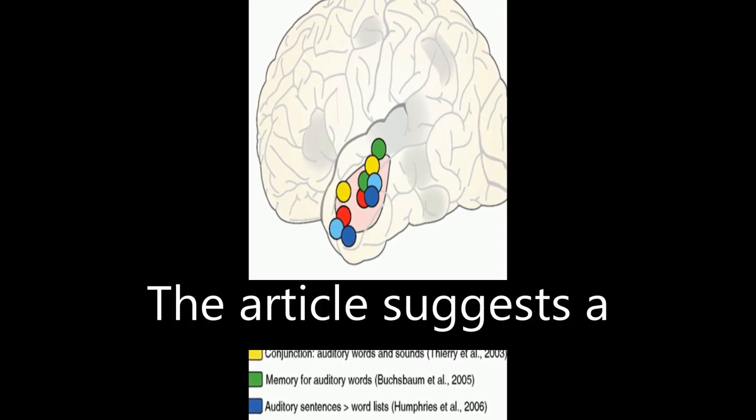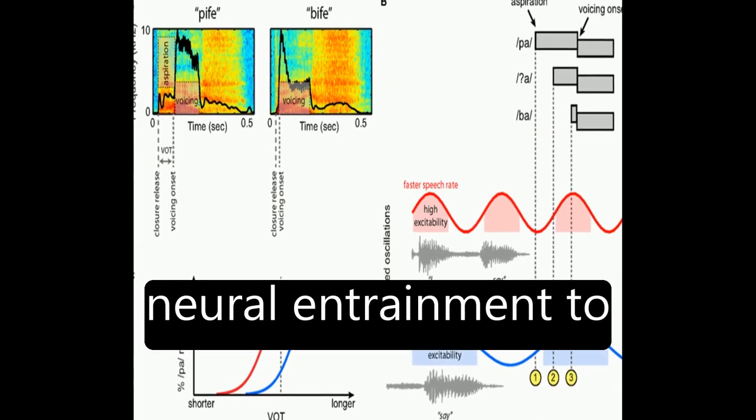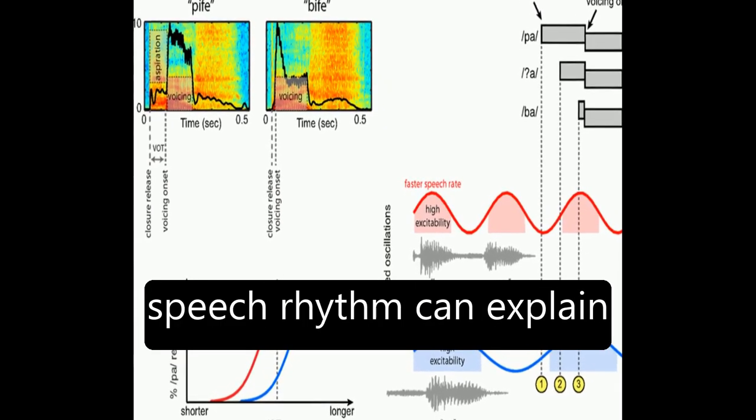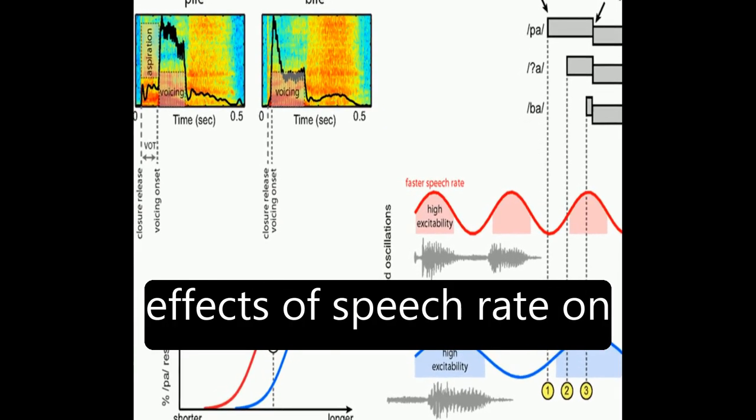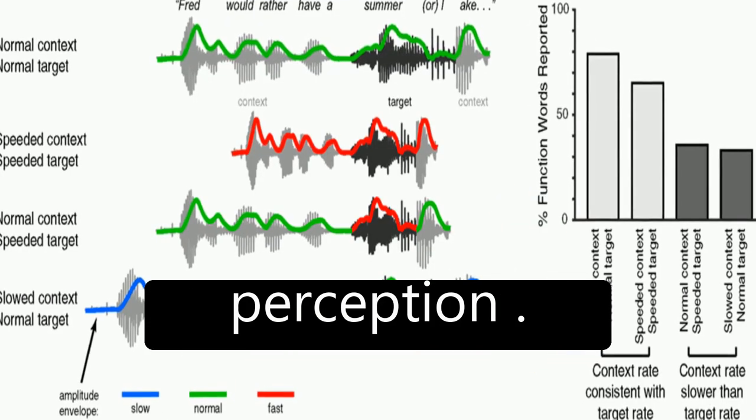The article suggests a framework through which neural entrainment to speech rhythm can explain effects of speech rate on word and segment perception.